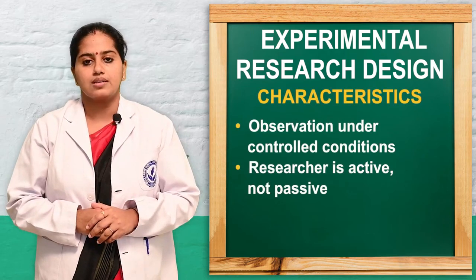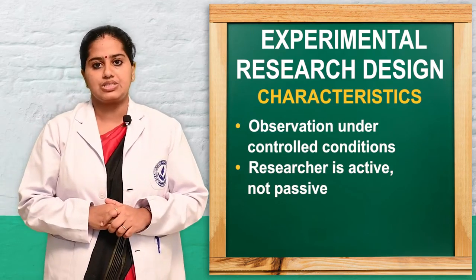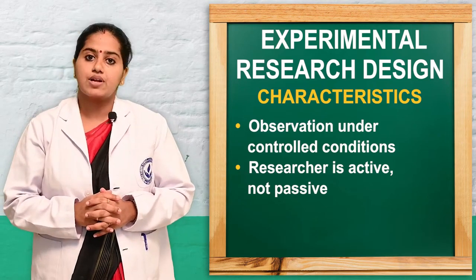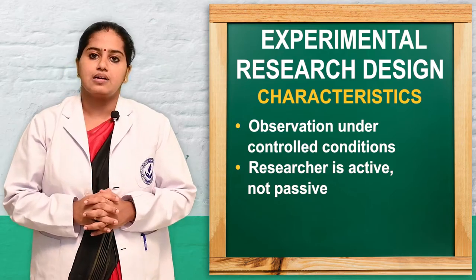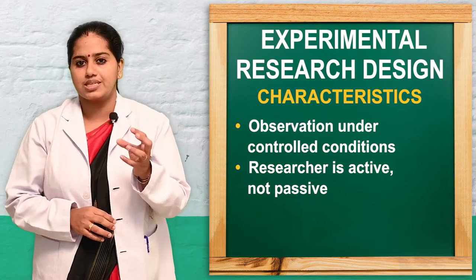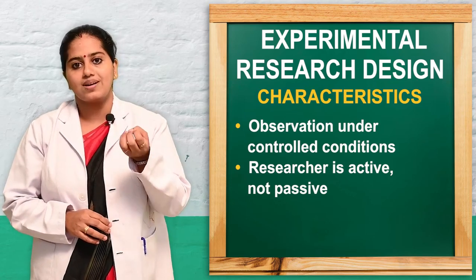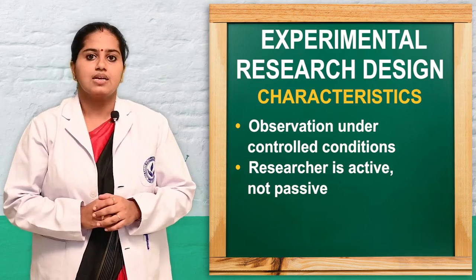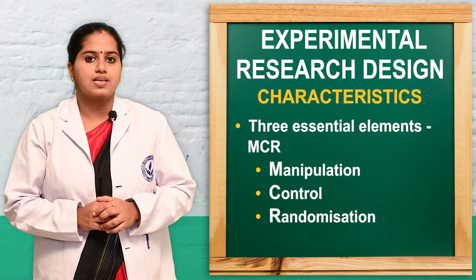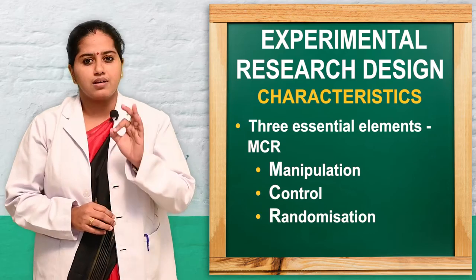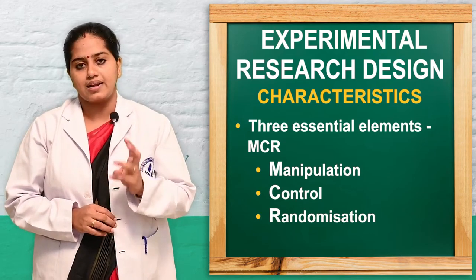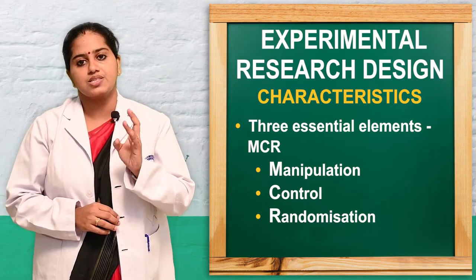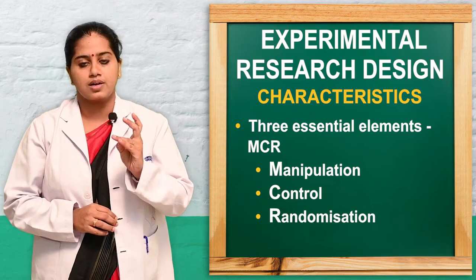Here we will see what are the characteristics of experimental research design. Characteristics of experimental research design: it mainly gives observations under controlled conditions. We can find out how we are giving the treatment, what is the effect of the treatment, and what changes happen in the subject after giving the treatment. There are mainly three concepts: randomization, control, and manipulation.